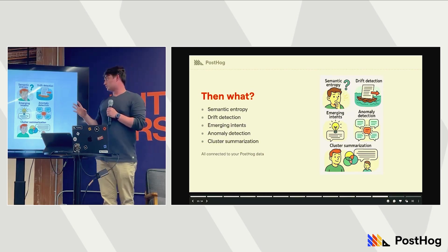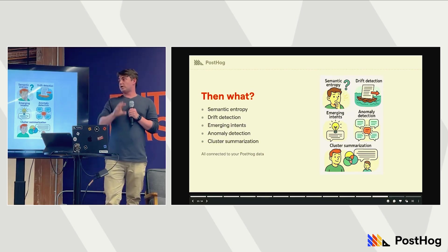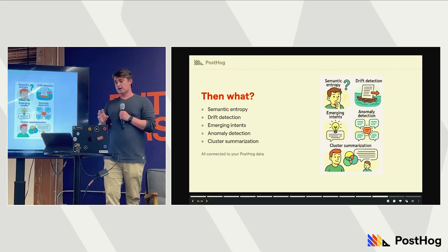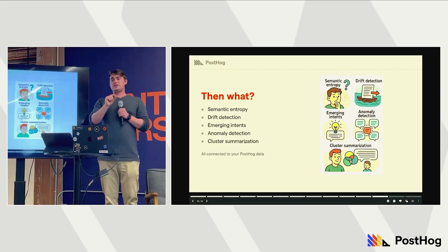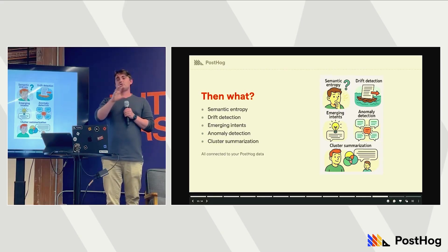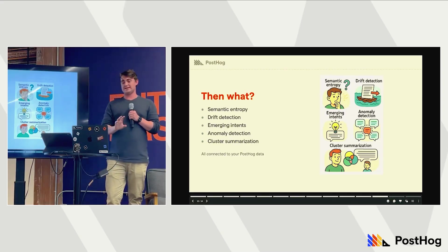We can also detect emerging intents — if someone starts using your LLM-based product for something you didn't intend, you can see that early because those will fall into non-existing clusters. And rather than summarizing one conversation, we can summarize a cluster of conversations, allowing us to broadly see what categories of people are using our application for, beyond the things we were already testing.